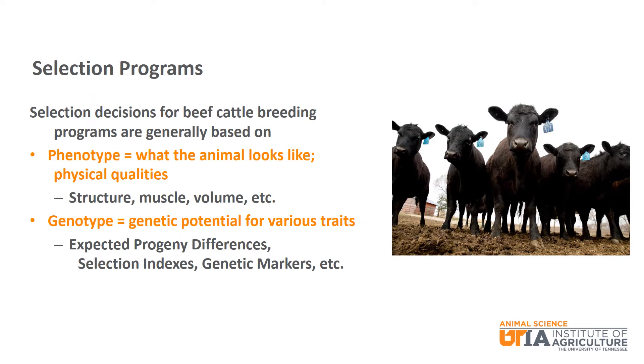Selection decisions for beef cattle breeding programs typically consist of an evaluation of an animal's phenotype and genotype. Phenotypic evaluation is basically what physical attributes does the animal have that will help me reach the goals of my cow herd as quickly as possible. This would be things like structure, muscle, and volume along with others. Genotypic evaluation looks at the genetic potential that an animal possesses for the economically important traits, done through the use of genetic selection tools like EPDs, selection indexes, and marker assisted selection.